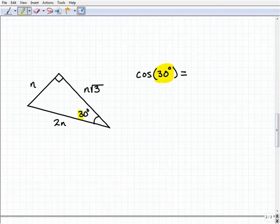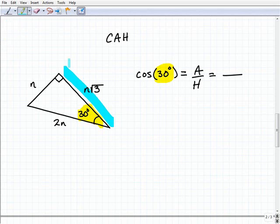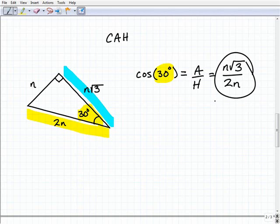Now we have cosine of 30 degrees. Cosine is associated with CAH, so that'll be the adjacent side over the hypotenuse. Which one is the adjacent side here? This side is the adjacent and the hypotenuse is 2n. So we'll get n over the square root of 3, that's my adjacent side, and my hypotenuse is 2n. Now you can actually simplify this even further by cross-canceling these n's, so you have the square root of 3 over 2. So cosine 30 degrees equals square root of 3 over 2.